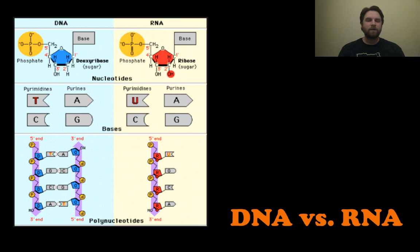Here's an overview of what they look like — you can see the structures in the diagram, and the key difference is that thymine is replaced with uracil in RNA.